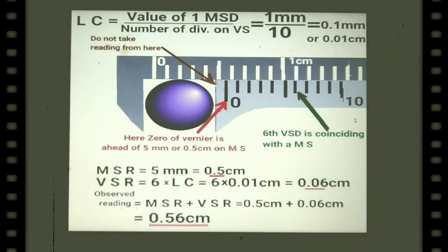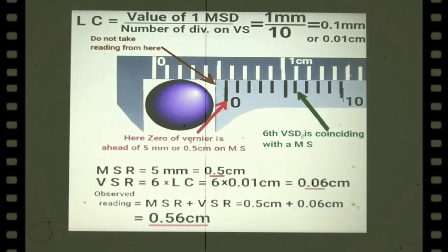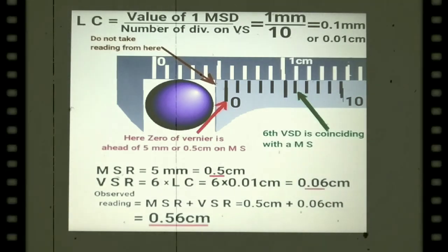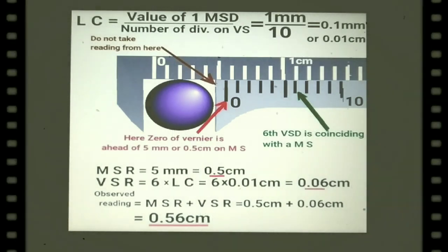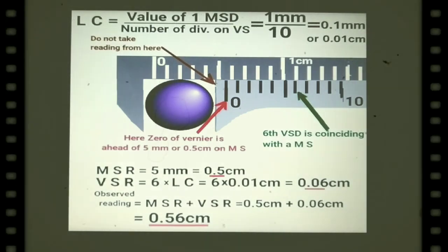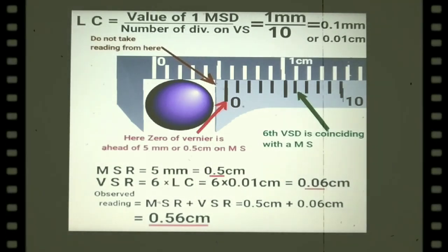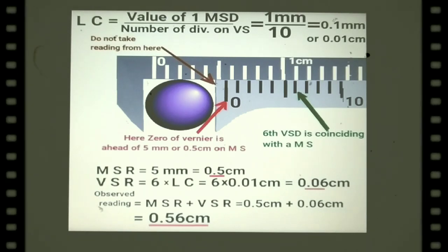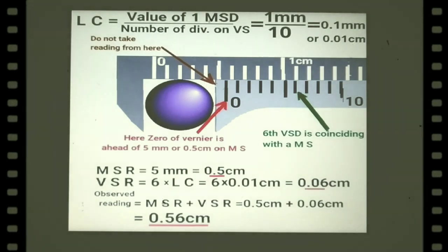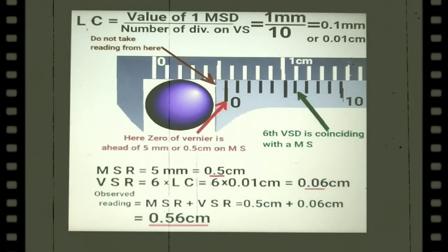First, the least count: value of one main scale division divided by number of vernier divisions equals 1 mm divided by 10, which is 0.1 mm or 0.01 cm. Main scale reading: the zero of the vernier is ahead of the fifth division, so the main scale reading is 5 mm or 0.5 cm. Vernier scale reading: the coinciding division is the sixth, so that is 6 times 0.01 cm, which equals 0.06 cm. Observed reading: 0.5 cm plus 0.06 cm equals 0.56 cm.